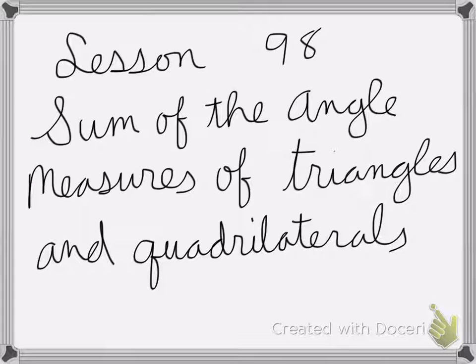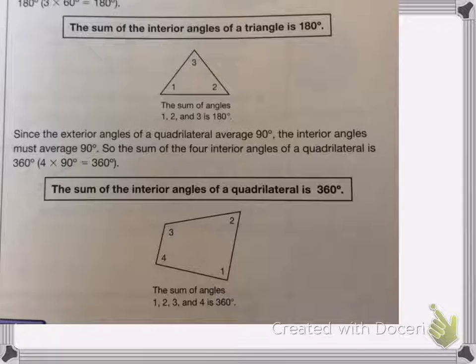All right, so lesson 98 is on the sum of the angle measures of triangles and quadrilaterals. So here we show the information, the sum of the interior angles of a triangle is 180 degrees. So if I add up all three angles, it's going to equal 180 degrees no matter what triangle I have.